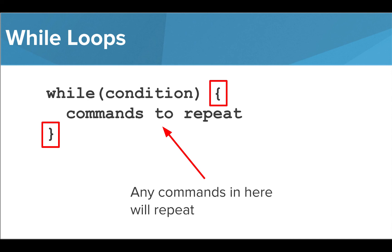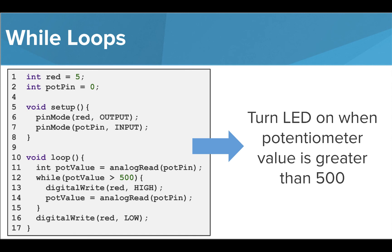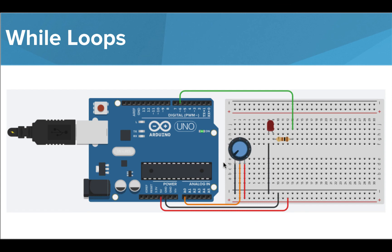Let's look at an example. Here, we are assigning a variable inside our loop function that is saving the current value of the potentiometer. The loop runs the command to turn on the LED as long as the value of the potentiometer stays above 500. Note that we need to be checking the value of the potentiometer both inside and outside of our while loop. When we run this program, we see that our LED turns on and stays on when the value is greater than 500 and turns off when the value dips below the threshold.